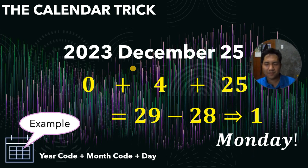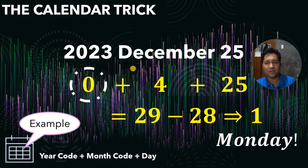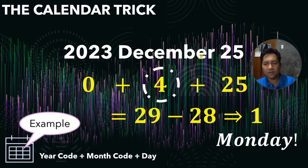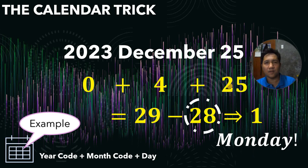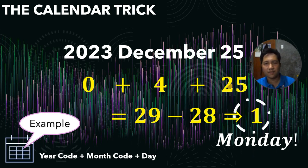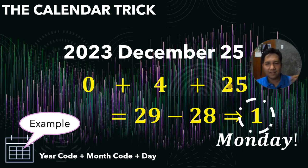Now you may have questions like: what is this year code, and how do we get it? Also, what is the month code and how do we get it? The day is simply added as-is. And why do we subtract a multiple of 7? And once we get an answer, how do we know if it corresponds to Monday, Tuesday, Wednesday, Friday, Saturday, or Sunday? I will now teach you how to do this trick, so watch the video until the end.